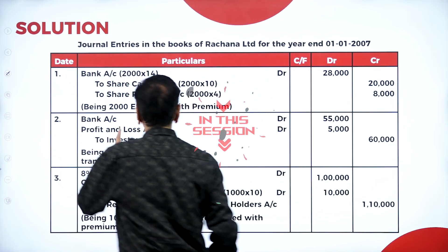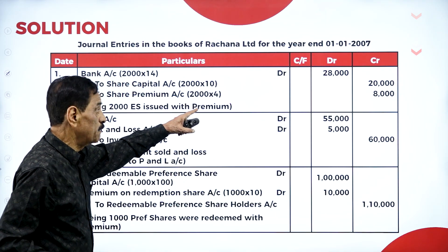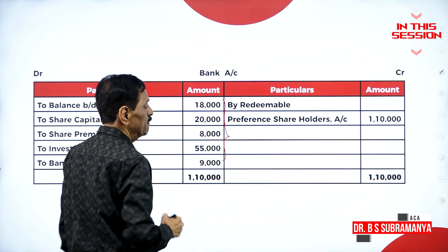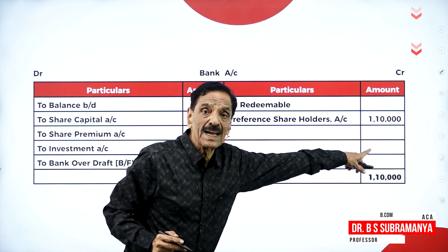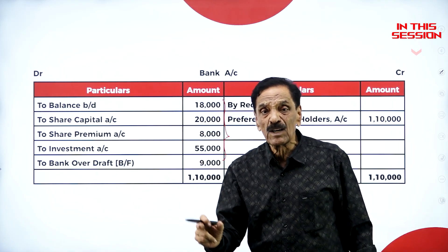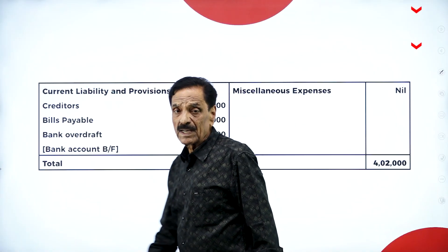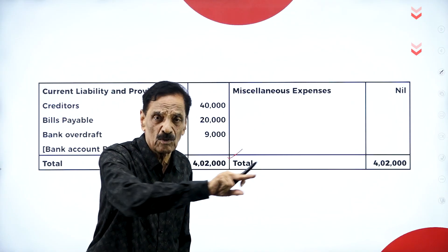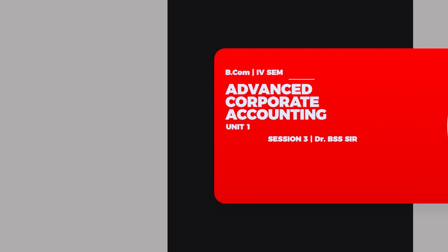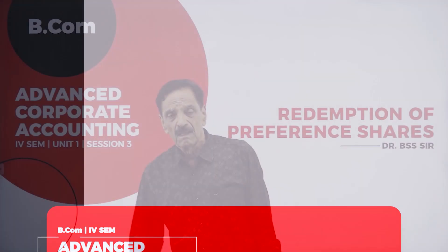Bank account data: 2014, 28,000; share capital 20,000. If we add all these things it will come to one lakh one thousand, but how much you have to pay is one lakh ten thousand. There was a shortage of nine thousand, for which we have taken the bank loan to the extent of nine thousand — that's called the bank overdraft. We created the bank overdraft entry: bank account debit to bank overdraft account to the extent of nine thousand.